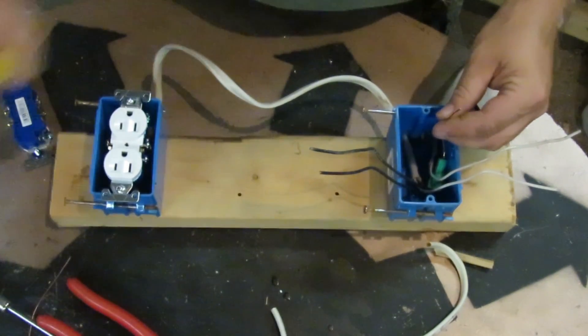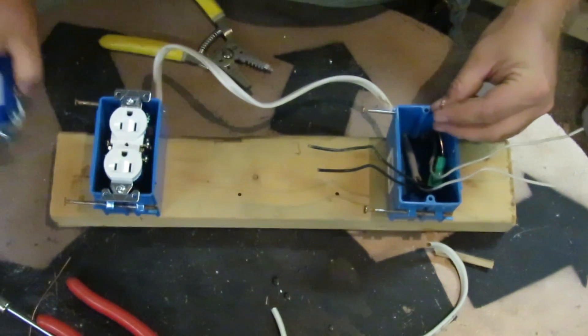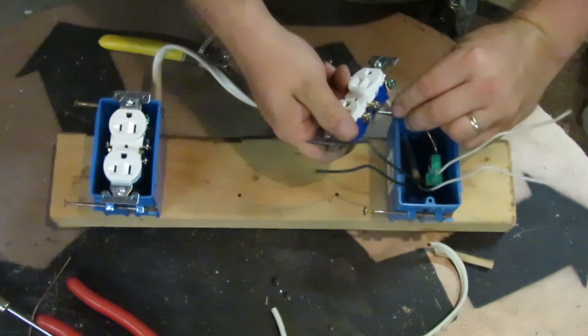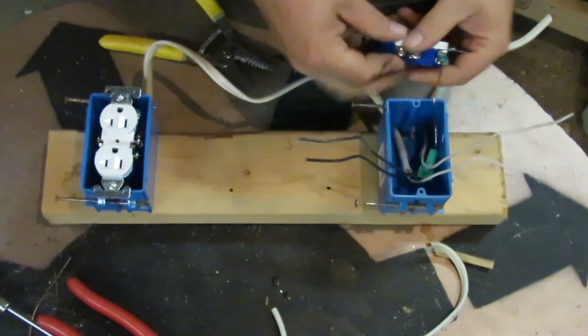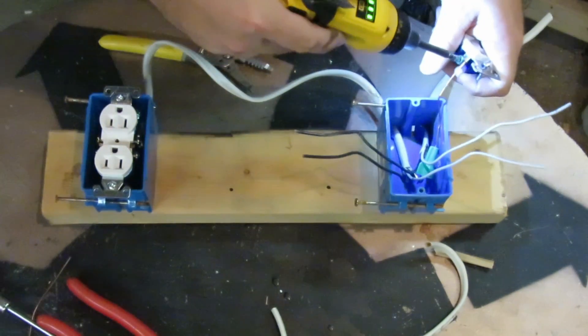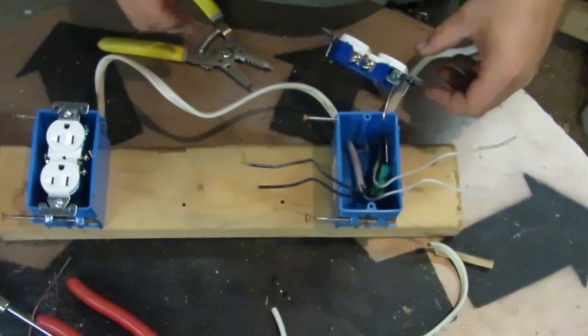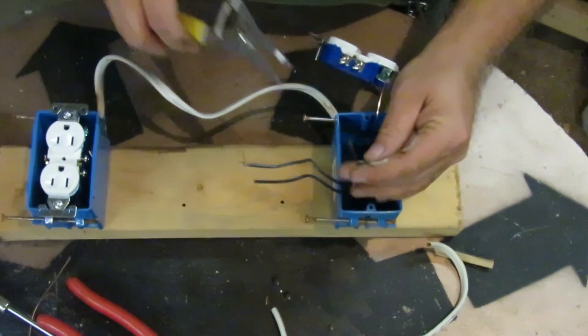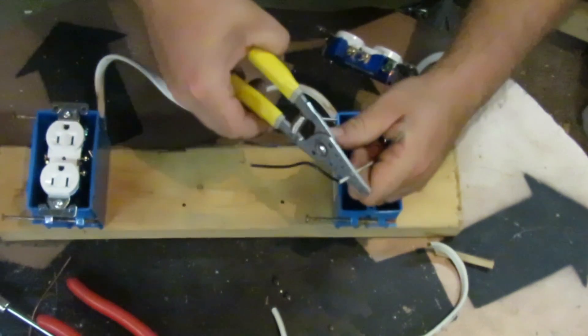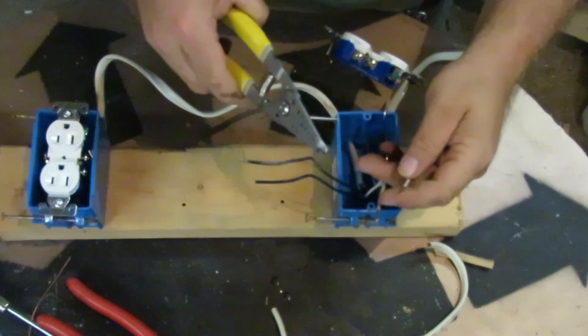Well, hooking up a receptacle with two or more sets of wires is about the same. You hook your ground wire and tighten that down. And then you're going to strip off your neutral wires. And always remember that your neutral goes on the silver screws. It's easy to remember. The white wires go with the white screws.